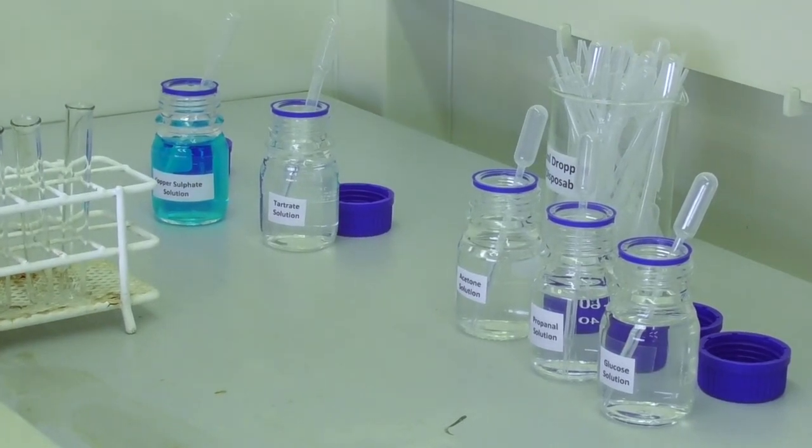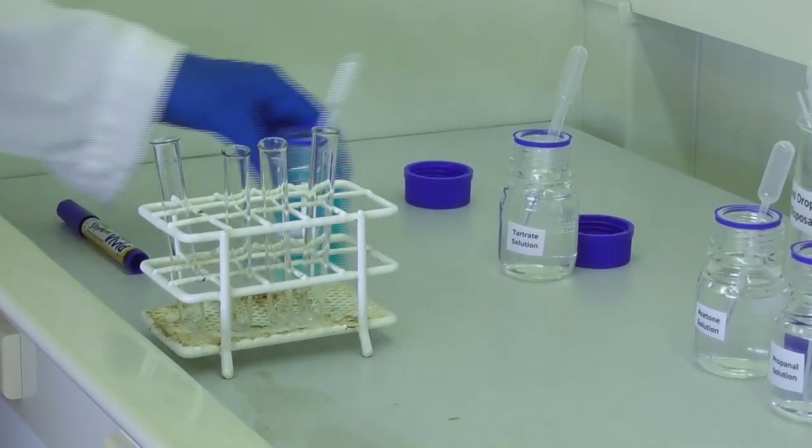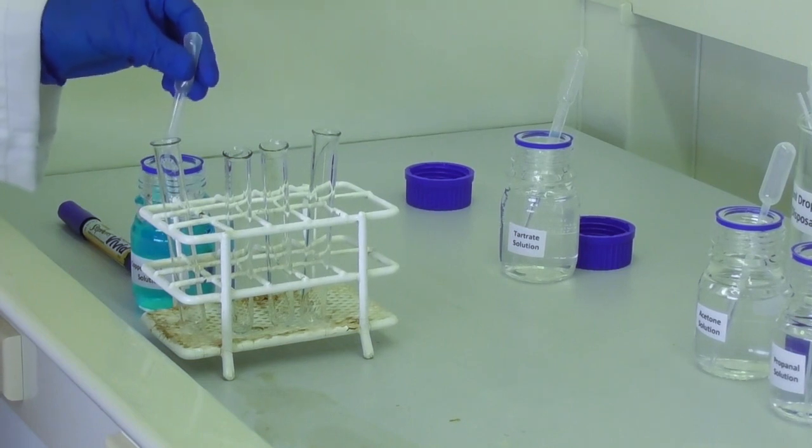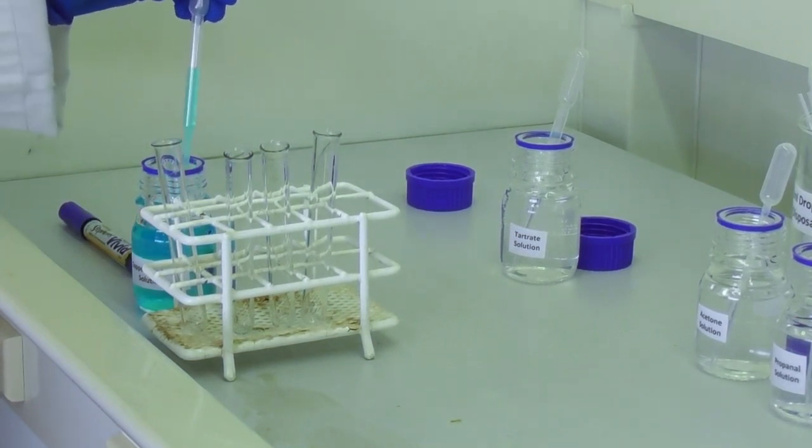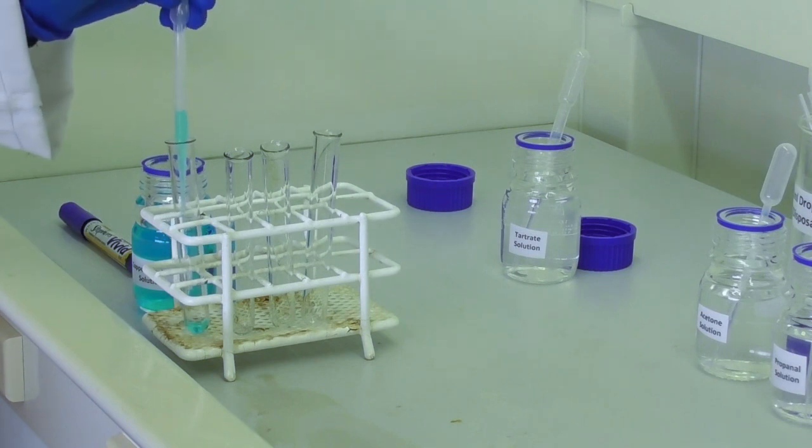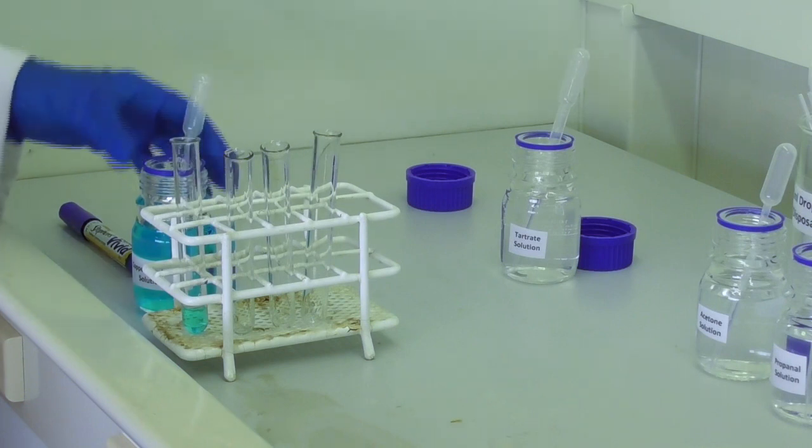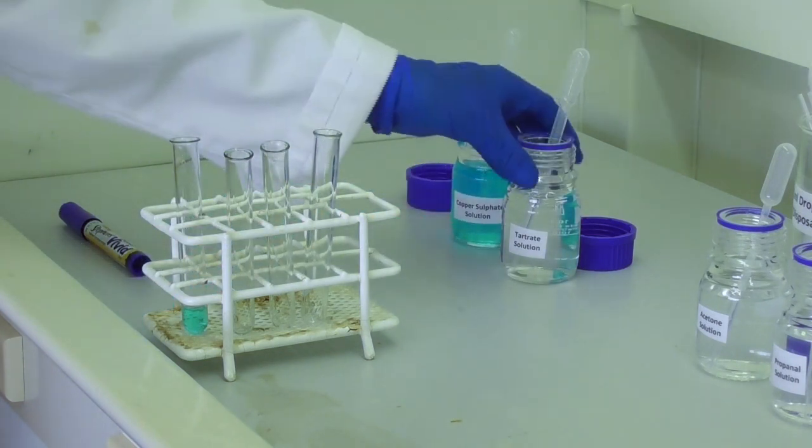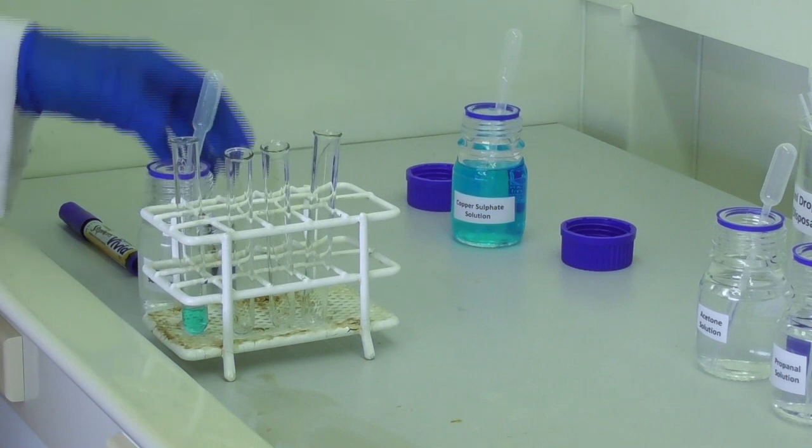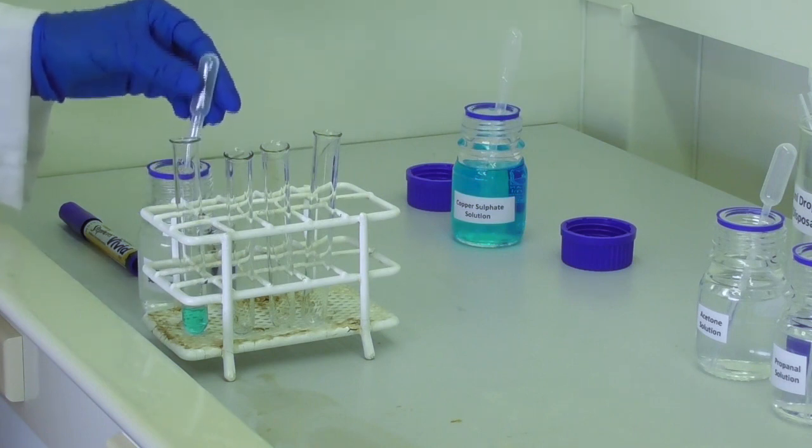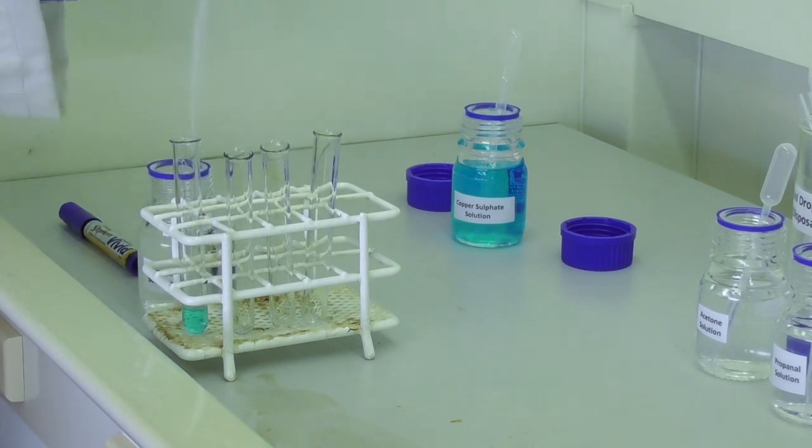To prepare Fehling solution, we add two milliliters of copper sulfate solution into a test tube. To this test tube, we also add two milliliters of tartrate solution.